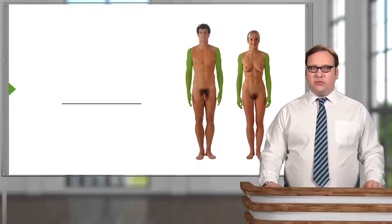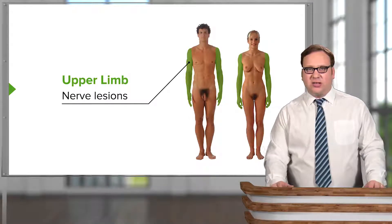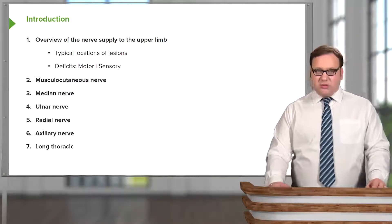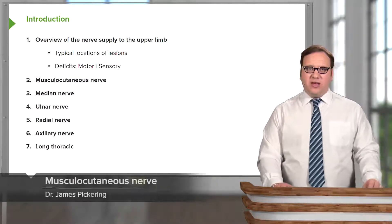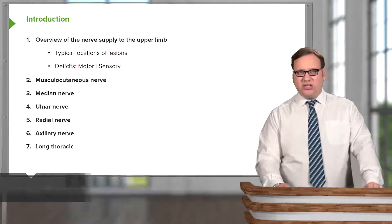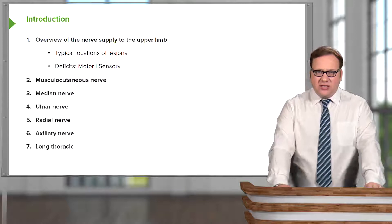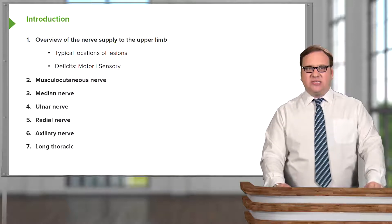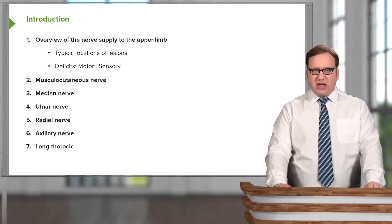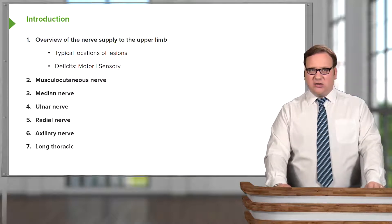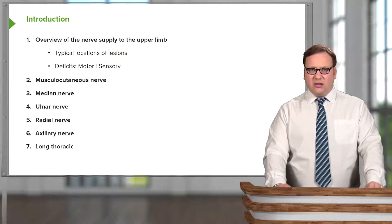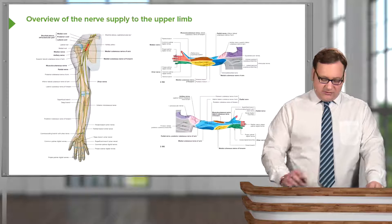In this lecture, we're going to look at the nerve lesions of the upper limb. We'll have an initial overview of the nerve supply to the upper limb and then look at some typical locations of the lesions and how this leads to motor and sensory deficits. We're going to look at some nerves that we've already covered in the course: the musculocutaneous, the median and the ulnar nerves, and the radial, axillary and long thoracic nerves.